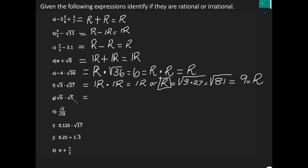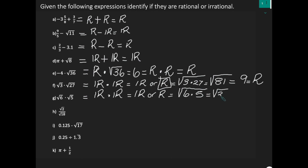Let's try G. We have the square root of 6 — can't take that in my head, so that is irrational. Times the square root of 5 — can't take that in my head either, so that is also irrational. But remember, when you multiply two irrationals, your answer can be irrational or rational. So we do the math: instead of two radical signs, I'll use just one. 6 times 5 gives me 30, so I have the square root of 30. I can't take the square root of 30 in my head — so my answer is irrational.